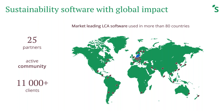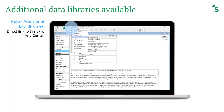In SimaPro, when you purchase a license, a number of libraries are included by default in what we call the professional database. In addition to that, we have a number of data libraries available as an additional download. Some of these are free, but some require additional licensing, as with Carbon Minds. We also invite users to check local data sources — some may not be included by default due to additional licensing costs or because they cover a very specific regional or thematic scope not relevant to the wider SimaPro user base.